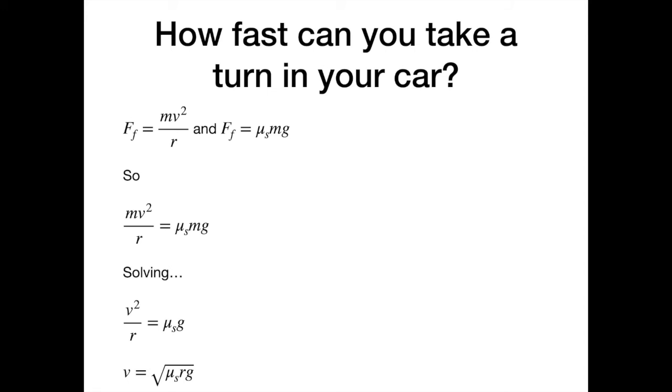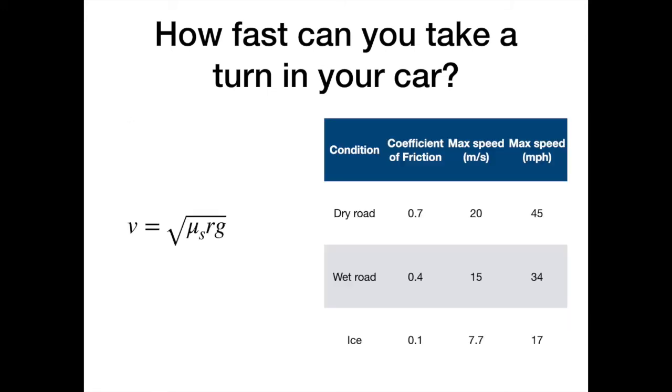So for that turn, the highway exit ramp using that and some coefficients of friction for various conditions of a tire on a road, we see that for a dry road that coefficient of friction is 0.7. And that means that the maximum speed you can take the turn is 20 meters per second. Now, that corresponds to 45 miles per hour, which is probably what the speed limit sign or the caution sign would say. Now, that's for ideal dry road conditions. And we can see with a wet road, that would be 0.4 for the coefficient of friction. So that slows down the maximum speed that you can take the turn to 34 miles per hour.